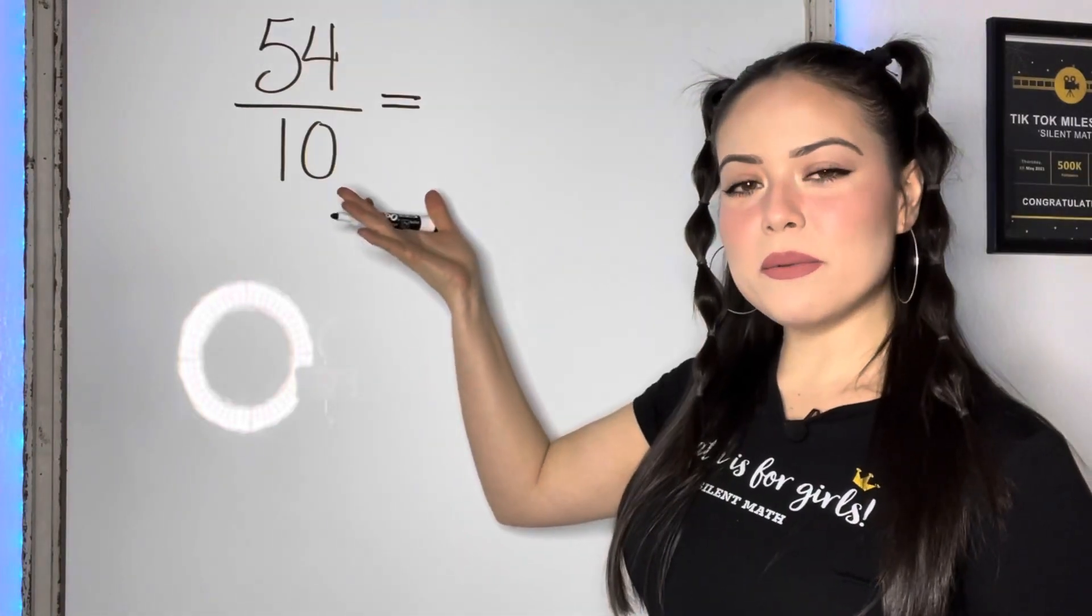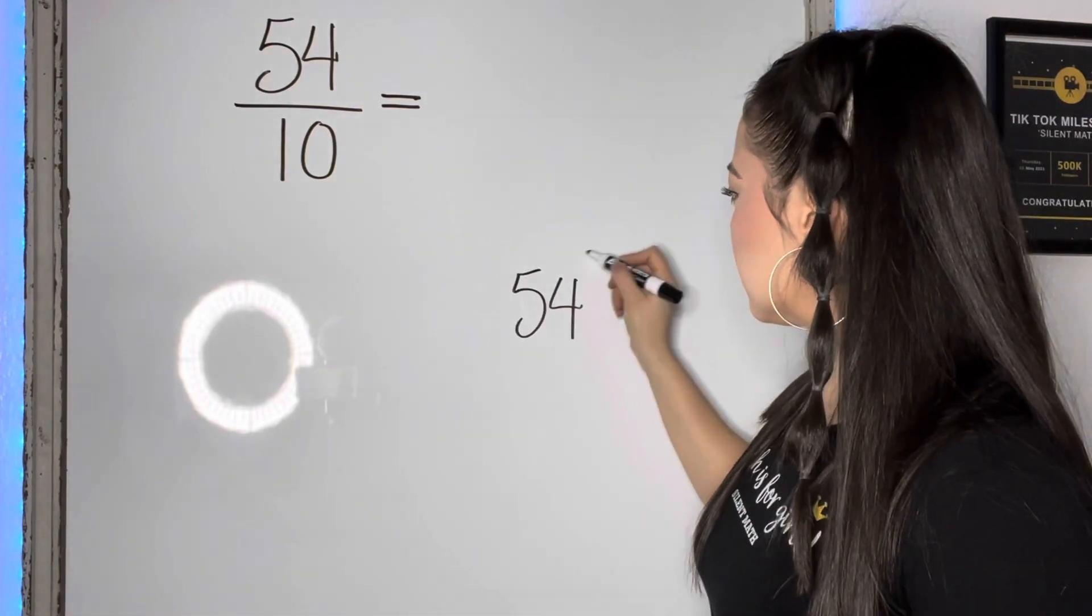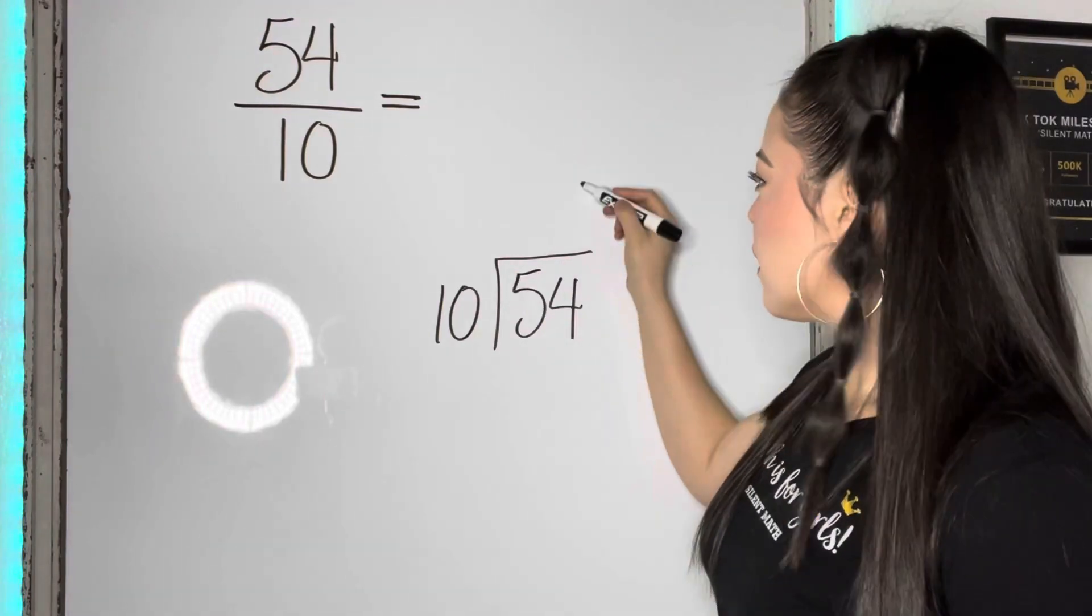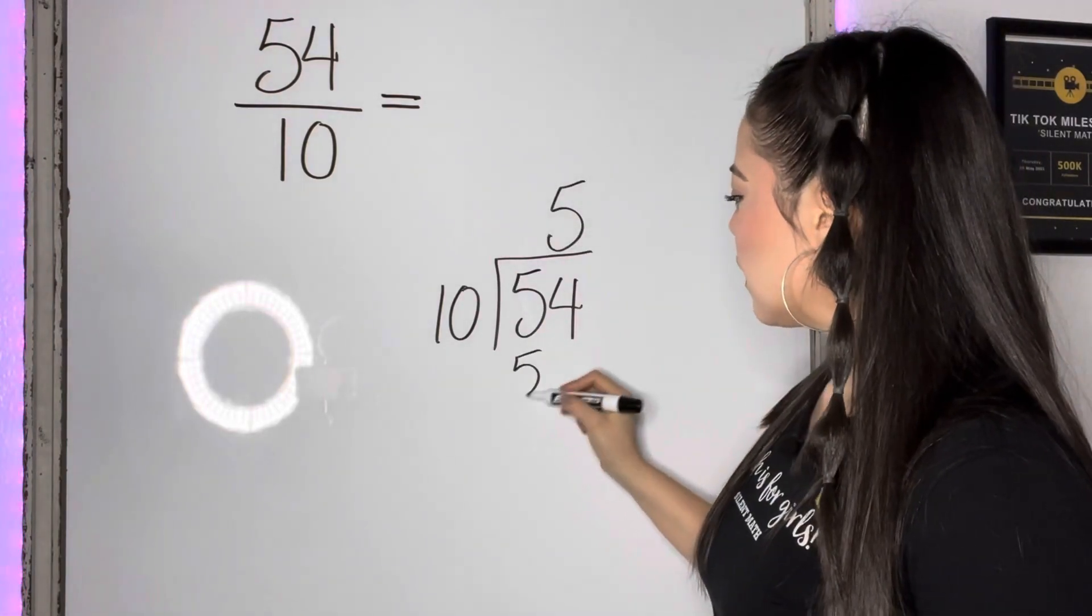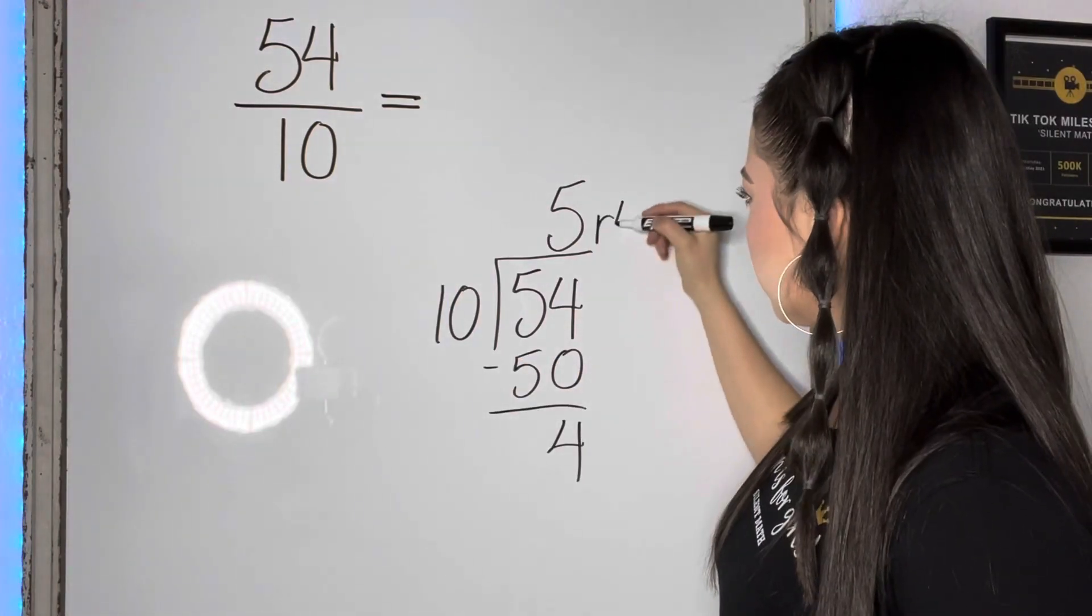Our last problem, 54 tenths. We're going to divide 54 divided by 10. 10 goes into 54 five times. That is a product of 50. We have a difference of four. Our remainder is four.